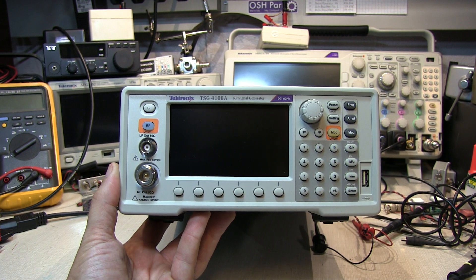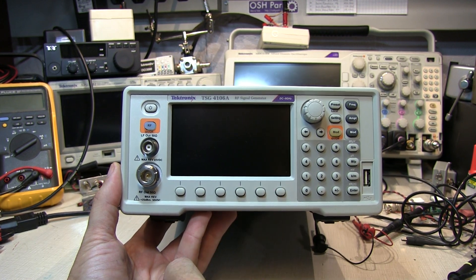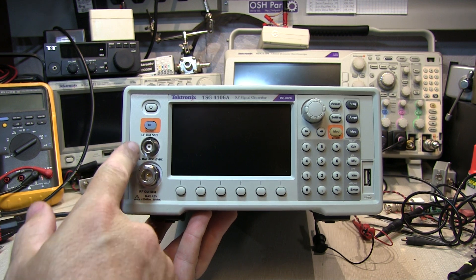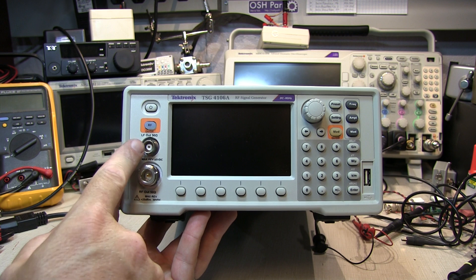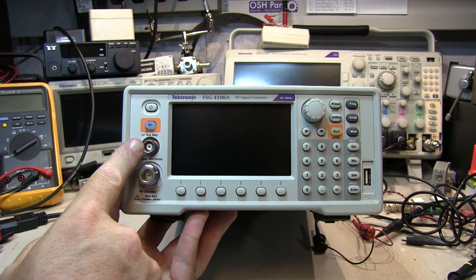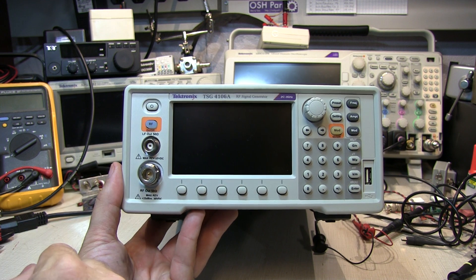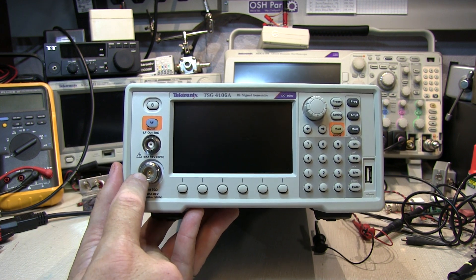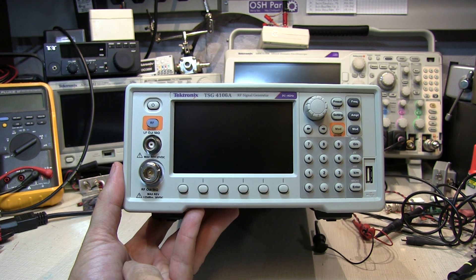A quick look at the front and rear panels. The front panel is nice and clean. It's a color display we'll look at in a moment. Two connectors for the RF output. The LF output takes you from DC up to either 62 megahertz or about 90 megahertz depending on the model. For the 6 gigahertz model that goes up to 90 megahertz.